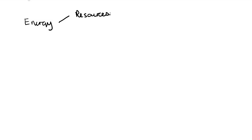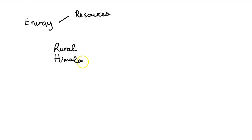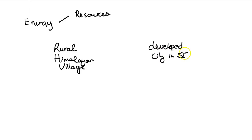They've used the term 'sources.' So what kinds of resources or sources are different societies going to use? That's going to depend on what resources are available to them. If we pick two societies using quite different resources, we can answer this question. The question is for six marks, so we're looking for three marks for each society. Perhaps we look at a rural Himalayan village and a developed city in Southeast Asia - for example, Bangkok, to be really specific.